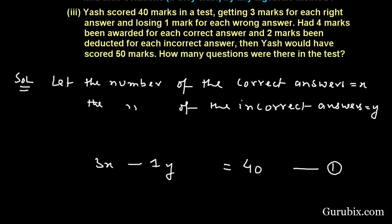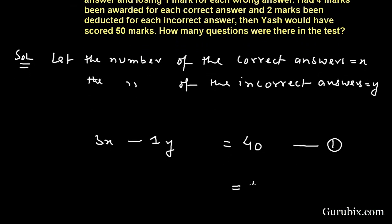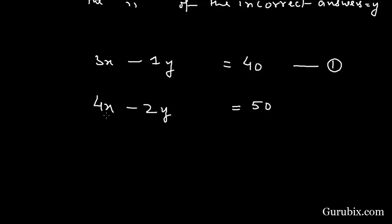And in case 2, Yash would have scored 50 marks if 4 marks awarded for the correct answer and 2 marks deducted for incorrect answer. We observe that we can divide this equation both sides by 2, then we have 2x - y = 25.